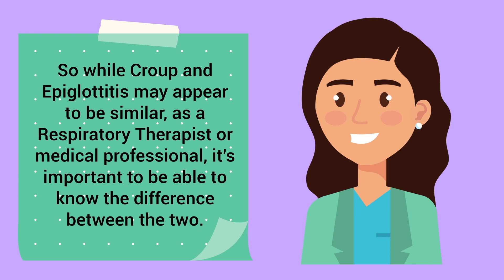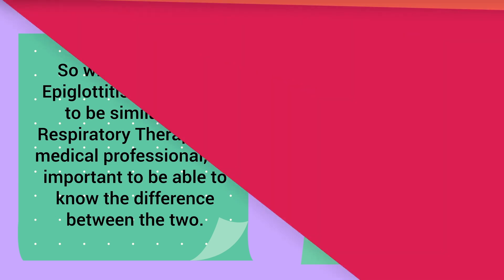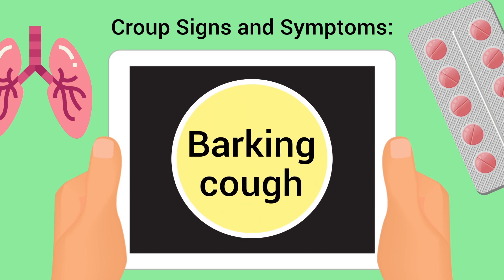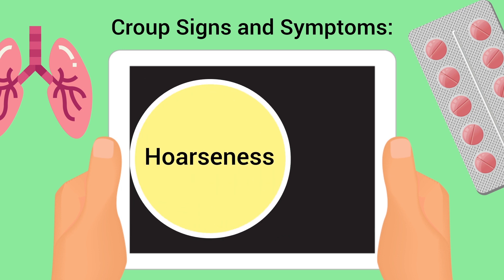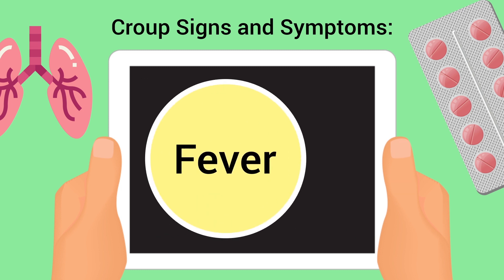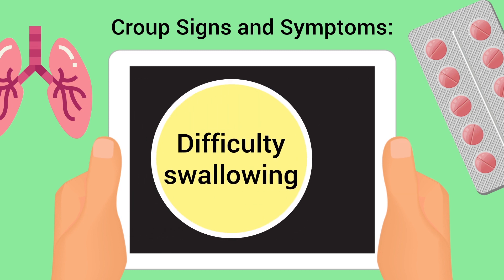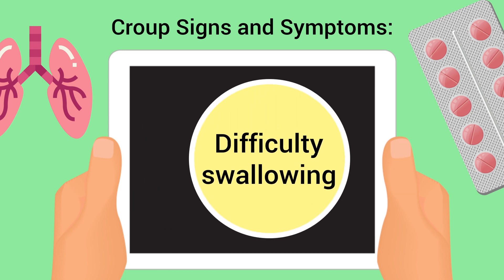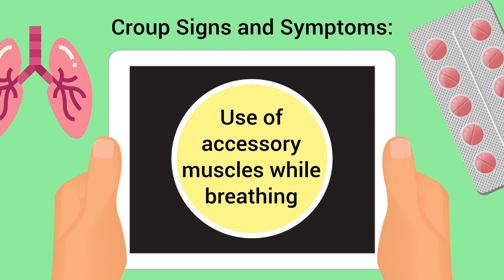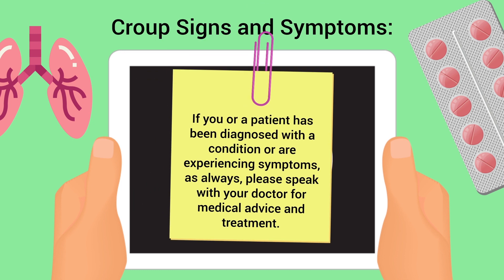While croup and epiglottitis may appear similar, as a respiratory therapist or medical professional it's important to know the difference. Some of the common signs and symptoms of croup include stridor, barking cough, hoarseness, dyspnea, tachypnea, fever, difficulty swallowing, intercostal retractions, and the use of accessory muscles while breathing.